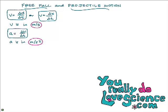Gravity is pulling on the object and making it fall faster and faster toward the earth. In this chapter, we're going to use a special kind of acceleration called acceleration due to gravity, and we have a special abbreviation for it: small g.